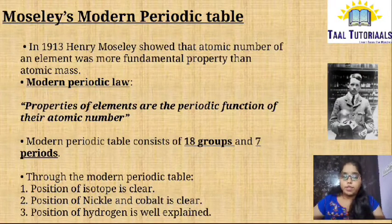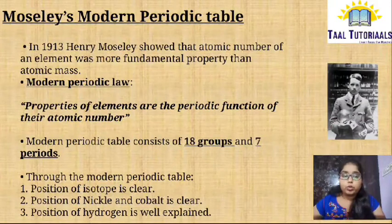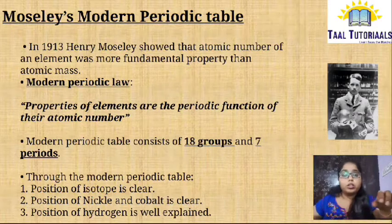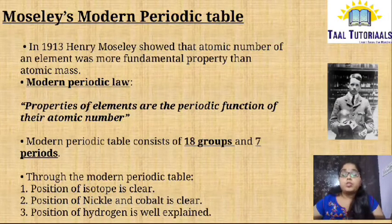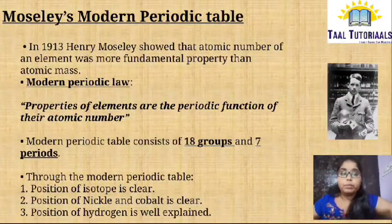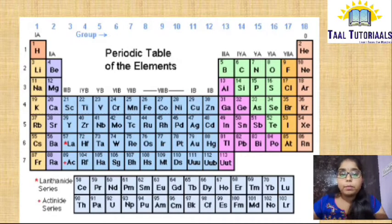Through the modern periodic table, the position of isotopes is very clear, and the positions of Nickel and Cobalt are also clearly explained. The position of hydrogen is also very well explained. As you can see in this picture, there are 18 groups and 7 periods — this is our modern periodic table.